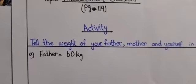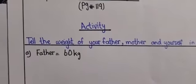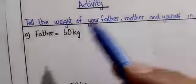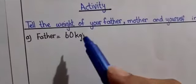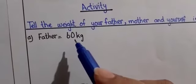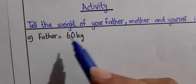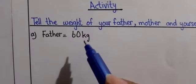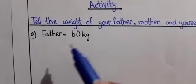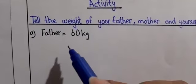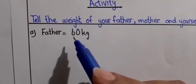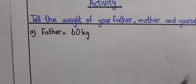For example, my father — I mean your teacher's father — his weight is 60 kg. You will write your own father's weight. What I have to do is convert this weight from kilograms into grams. You have learned that to convert kilograms into grams, we multiply by one thousand.